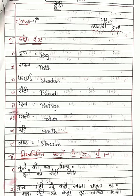Paani — Water. W-A-T-E-R. Water. Moh — Mouth. M-O-U-T-H. Mouth. Nala — Stream. S-T-R-E-A-M. Stream.